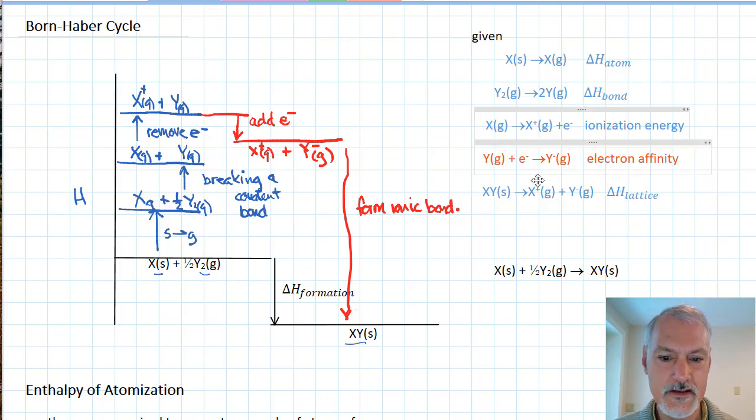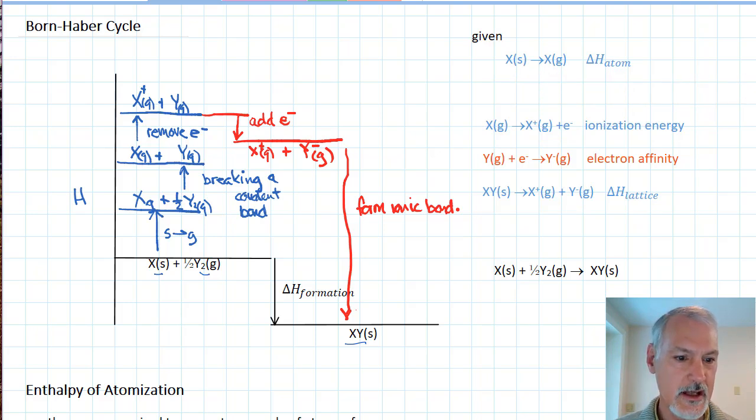In the next equation, I notice a small problem, the fact that this is Y2, and I require a half of Y2. So I'm going to multiply it by a half, and turn it into this equation. So whatever the enthalpy was in your IB data booklet, I'm going to use half of that value, because I only require half of Y2.